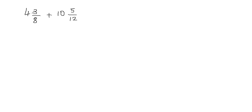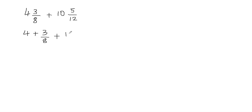Now if it's a mixed fraction, I can separate the whole number and the fractional part. So I'm going to write 4 and 3 eighths as 4 plus 3 eighths. And the same thing I can do with this mixed fraction — I can separate the whole number and the fractional part, so it can be written as 10 plus 5 twelfths.